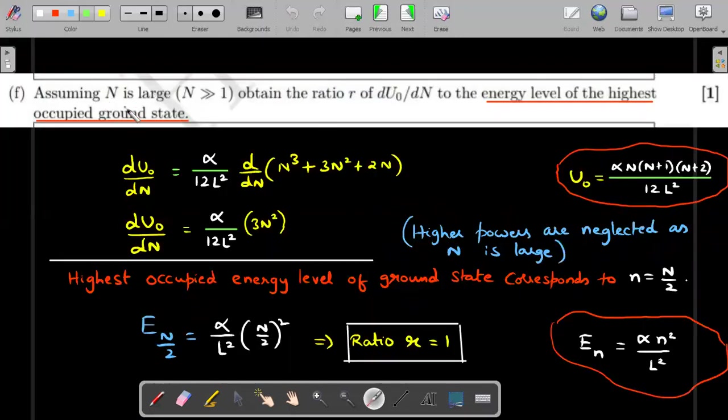Now, assuming the capital N, the number of electrons is very large, obtain the ratio of two quantities: dU_0/dN, a simple mathematical expression - you already know U_0 versus N, just differentiate. To the energy level of the highest occupied ground state. Here the English is very important. He's talking about the energy level of the highest occupied ground state. Please understand in multi electron species, the ground state itself represents different energy levels occupied.